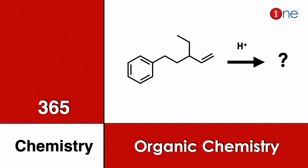Welcome to One Chemistry. This is the 365 Chemistry Series — organic chemistry questions. Here you have benzene with a side chain; you have both an alkyl and an alkene group. You are using acidic conditions, and you should find what the final product will be.